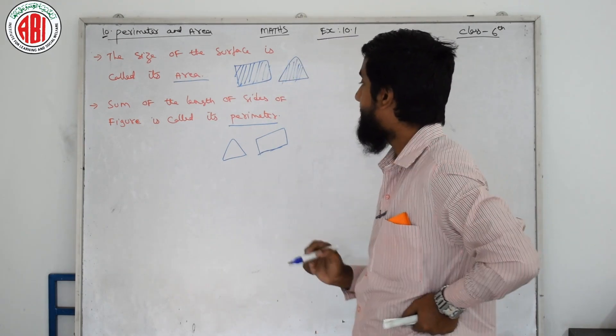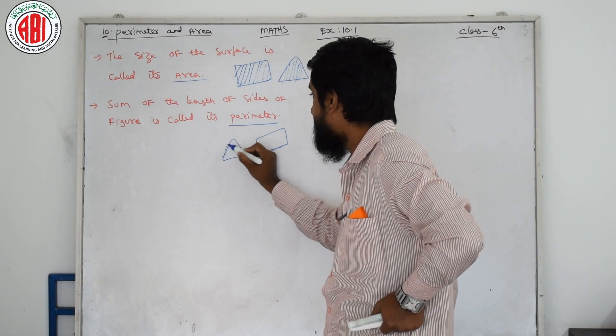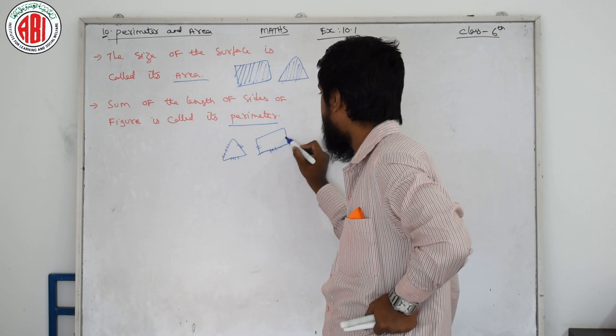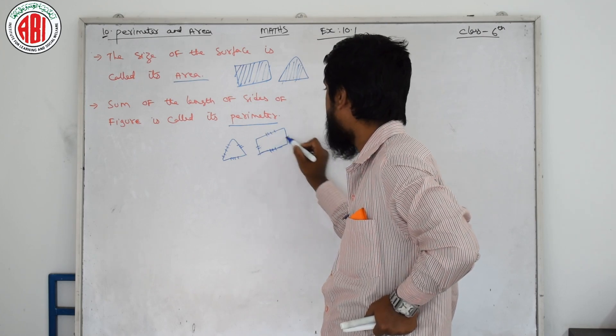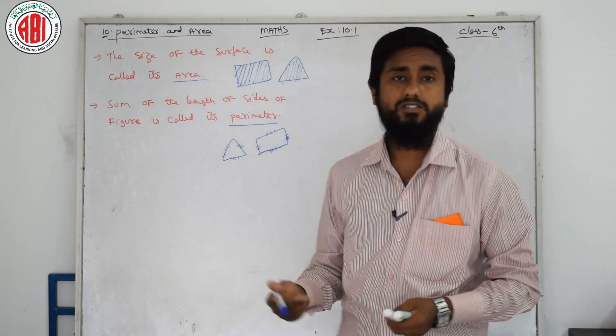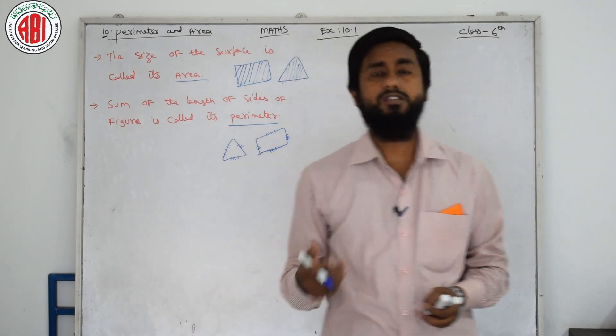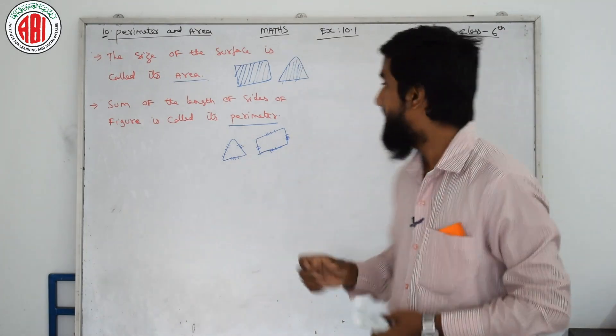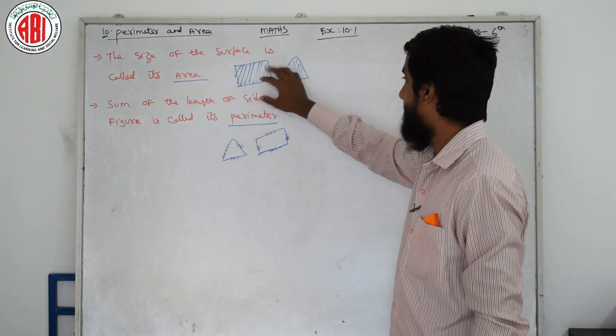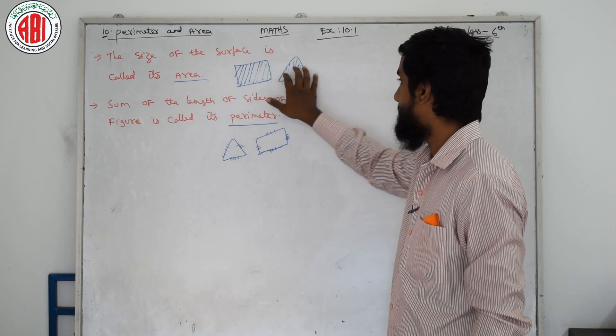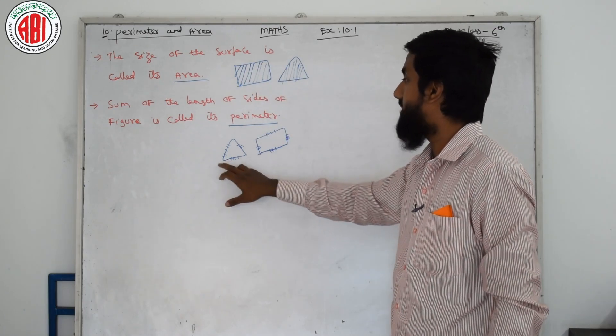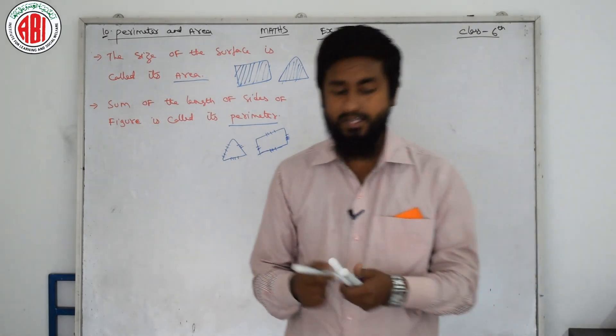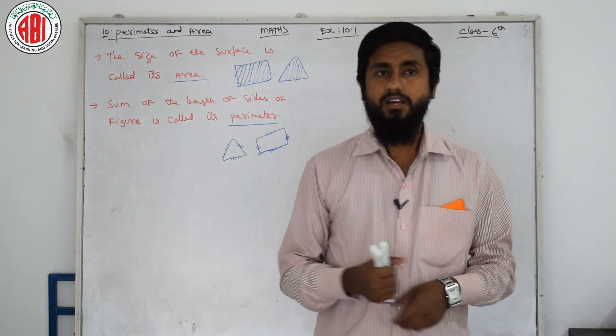What about Perimeter? Perimeter is nothing but the sum of all sides. All sides of the figure is nothing but perimeter. When you are solving the problem, we will go into the detail. You will understand automatically. The size of the surface is the area. Perimeter is the length of all sides.